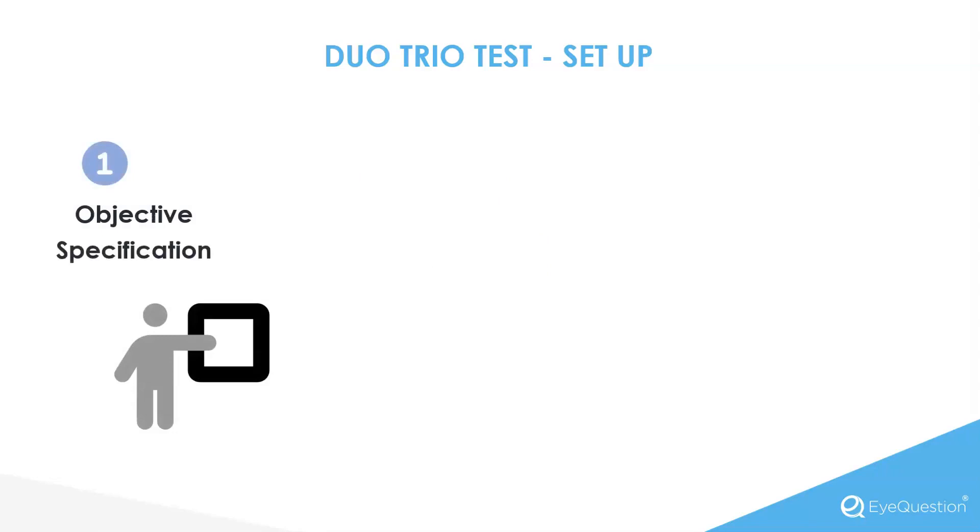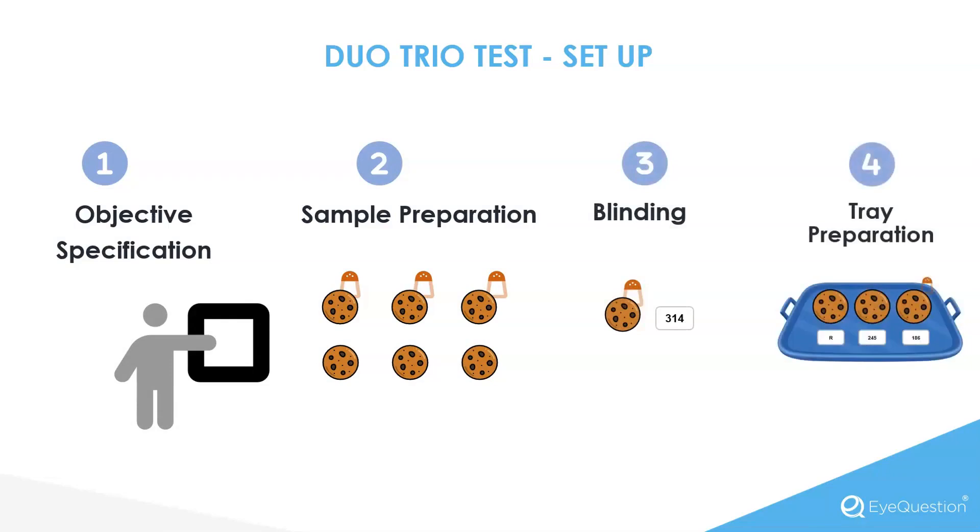To set up your Duo Trio Test, first define your objective. Following that, you can proceed to prepare your sample and apply a blinding label to the products.